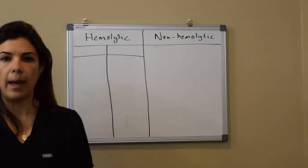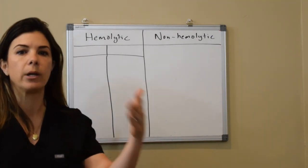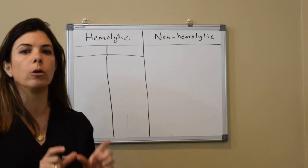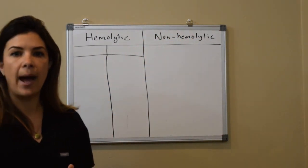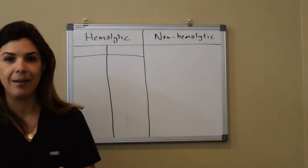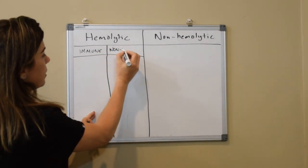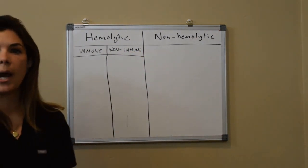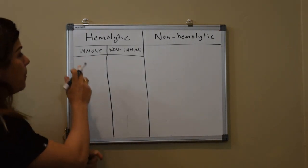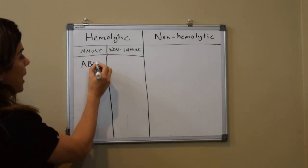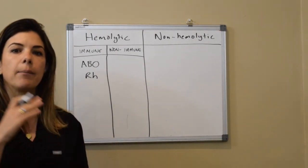One of the things that can cause a very high bilirubin level is red blood cells breaking down at a faster rate — that's called hemolysis. We can have hemolytic reasons or non-hemolytic reasons for a high bilirubin. The hemolytic reasons can be further divided into immune and non-immune reasons. The immune reasons — which I'm going to go over in a completely separate video — most commonly include ABO incompatibility, Rh incompatibility, or any other blood type abnormalities between mother and baby.